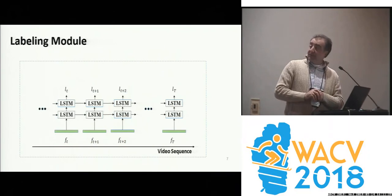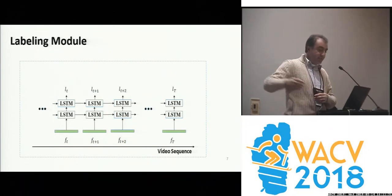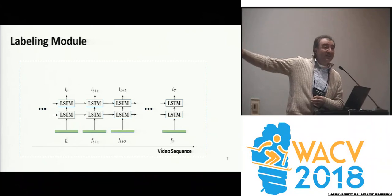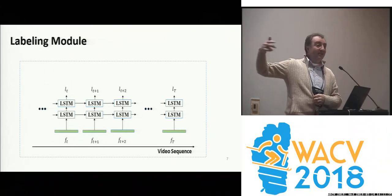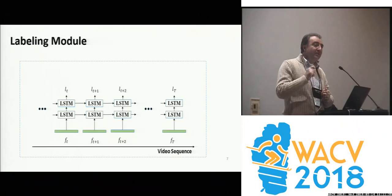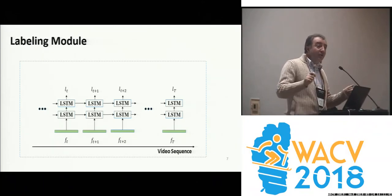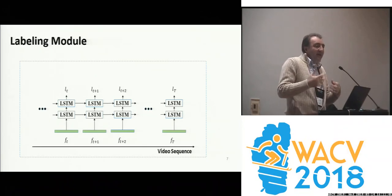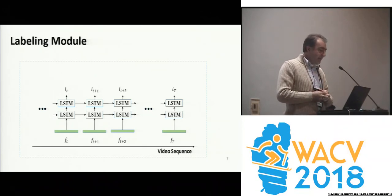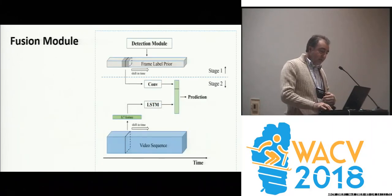The frame-wise labeling module uses the same features, feeding into two two-stage LSTMs to impose dynamic constraints. These are short-term LSTMs. We found that long-term activities cannot really be accurately modeled by these LSTMs.